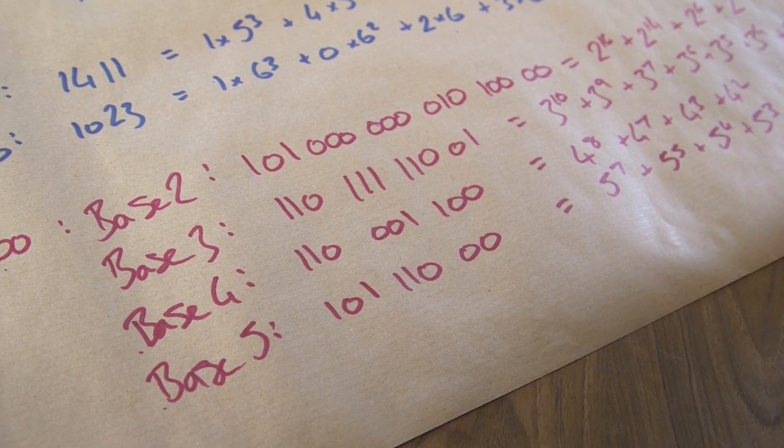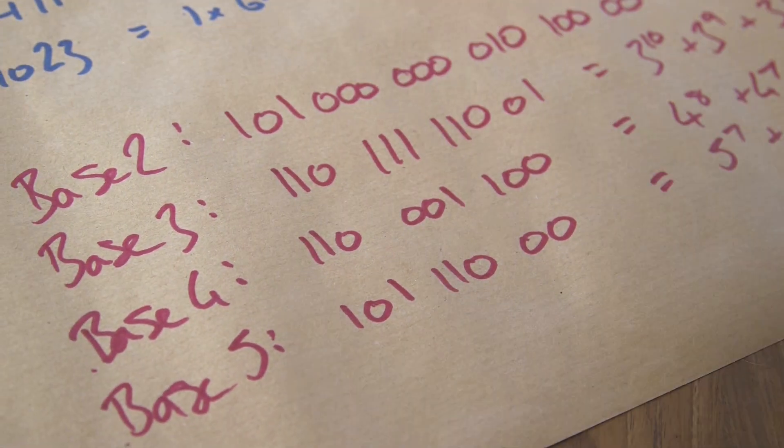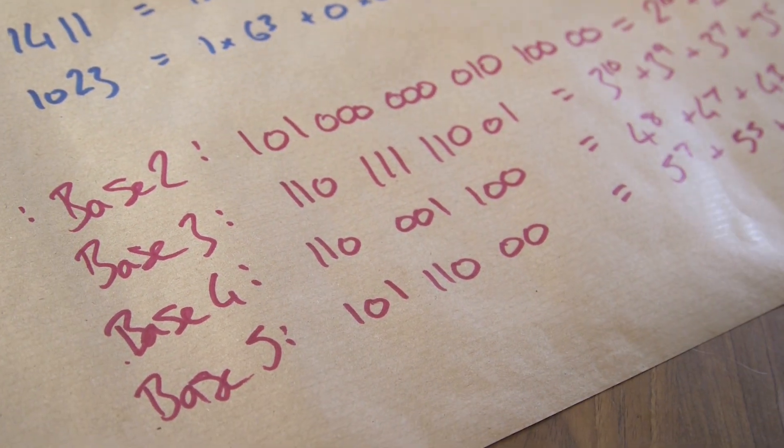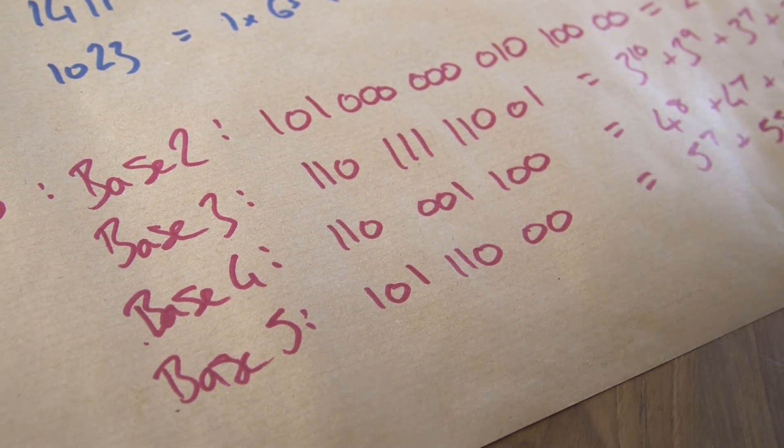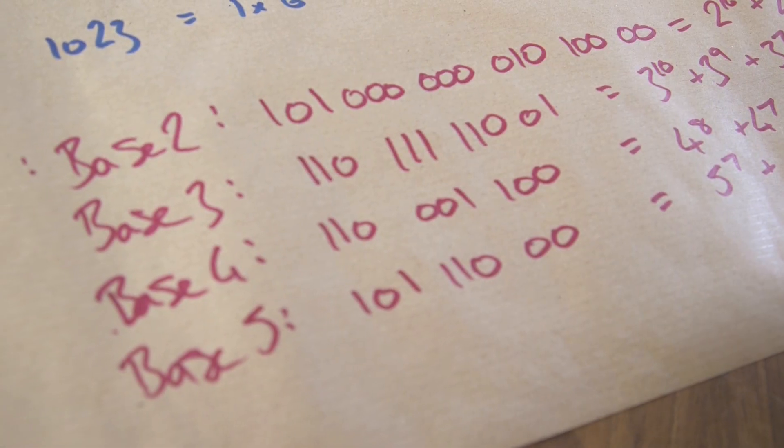A number doesn't have to be written as 1s and 0s — in base 2, numbers are always written in 1s and 0s. But in base 3, we have no digit 2s here. In base 4, we have no digit 3s here. For 82,000, it's always written in 1s and 0s, and it does appear to be the only number that has this property — that it can be written in 1s and 0s in base 2, base 3, base 4, and base 5.